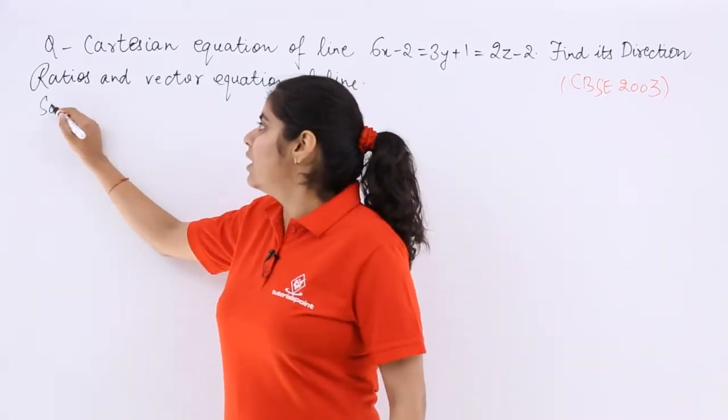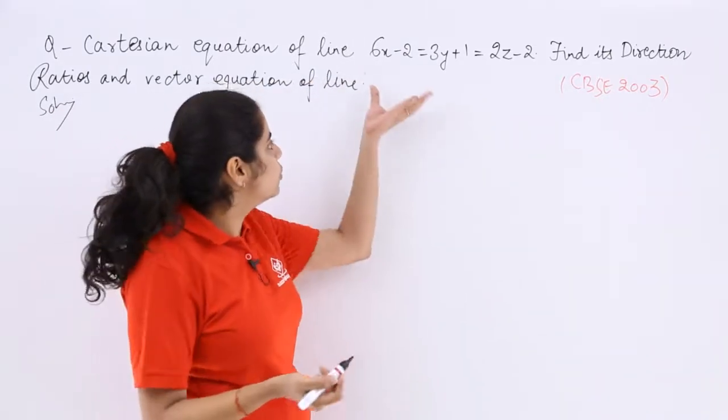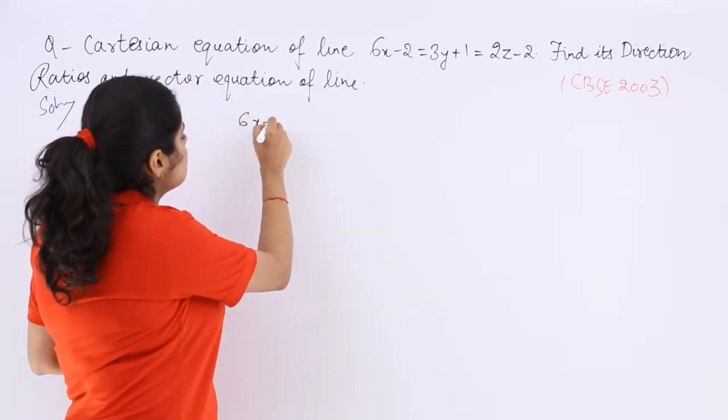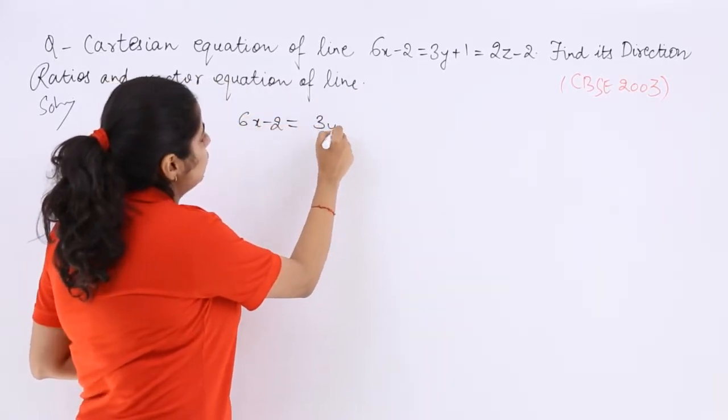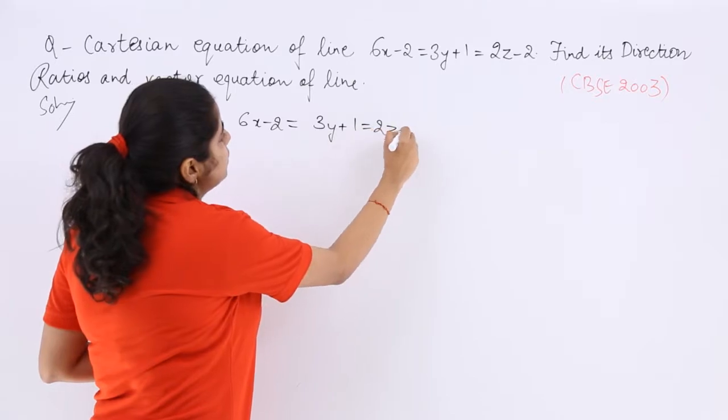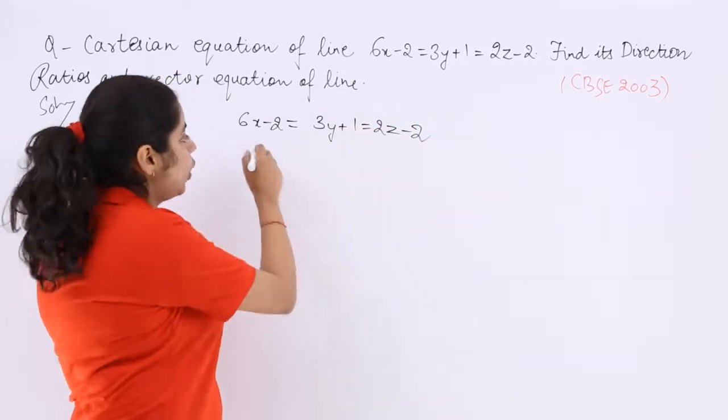I write solution. Now let's see what to do. See what has been given to you. You have been given 6x-2 is equal to 3y plus 1 is equal to 2z-2. Let's take some things common.